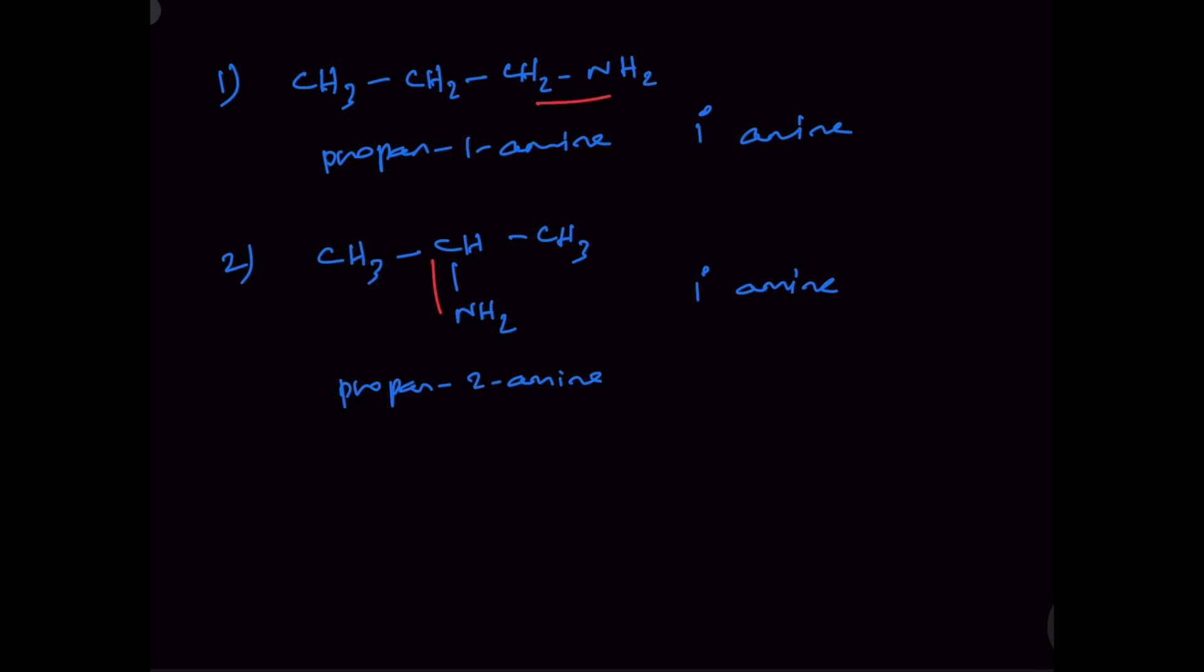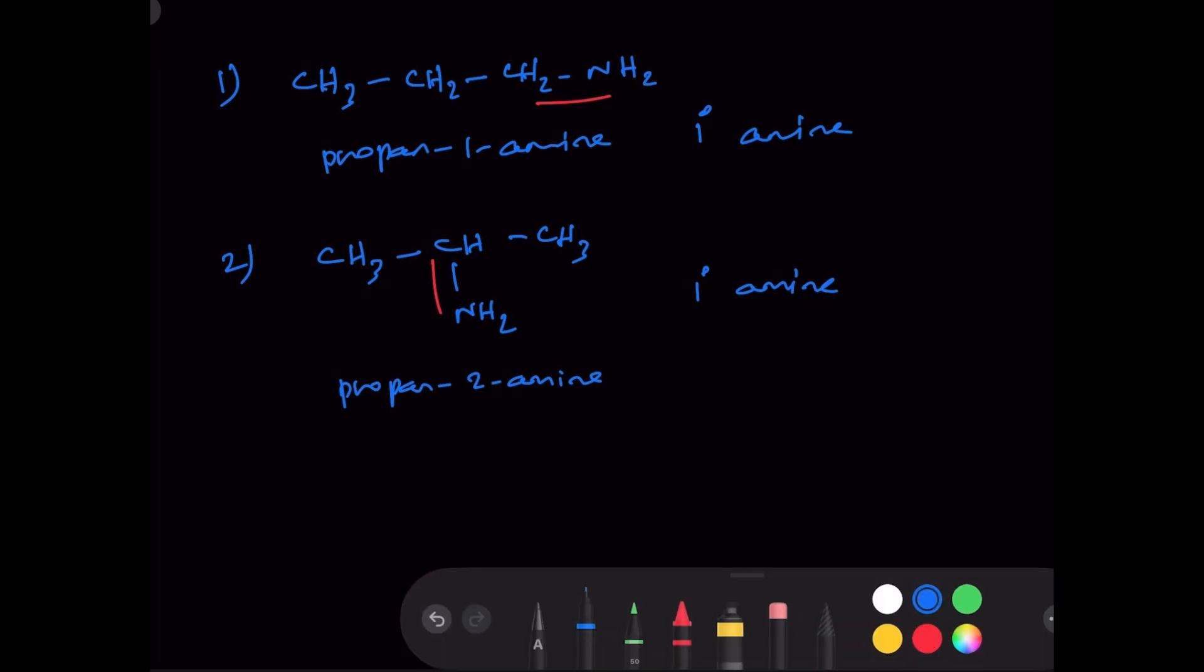But here we should not see like that. We should see the nitrogen atom is connected to how many carbon atoms. That's what you need to worry about, and therefore both of them are primary amines.